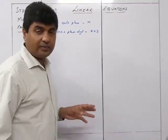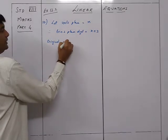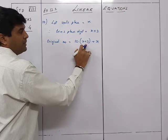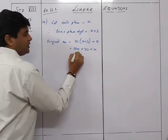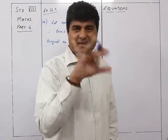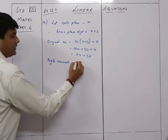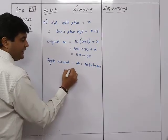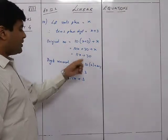The original number equals 10 times the tens place plus the units place, which is 10(x+3) plus x, giving us 10x plus 30 plus x, which is 11x plus 30. Now on interchanging the digits — like turning 72 into 27 — the new number becomes 10x plus (x+3), which equals 11x plus 3.